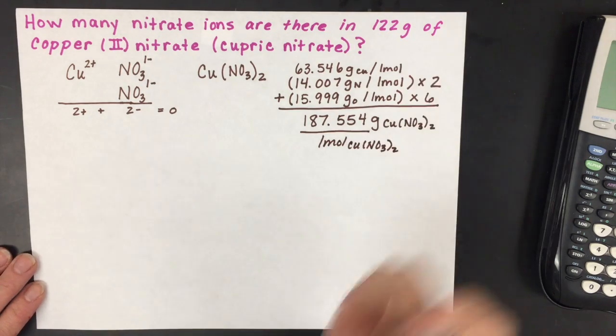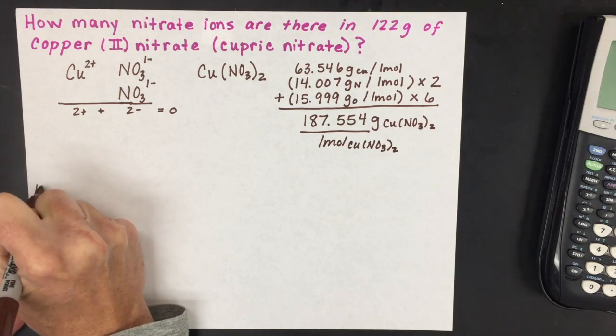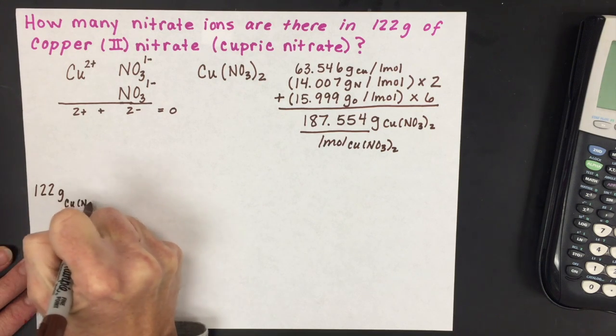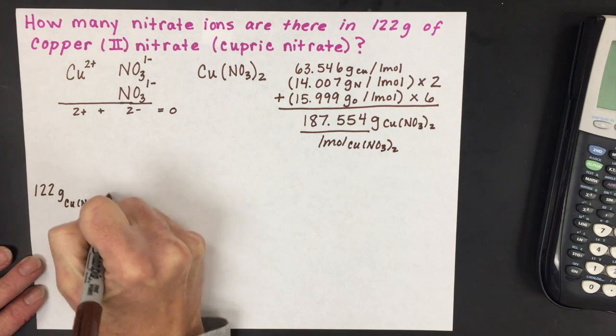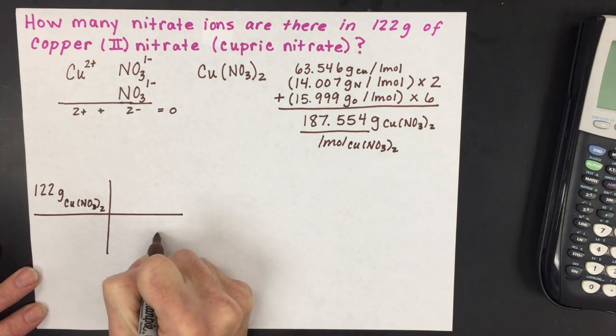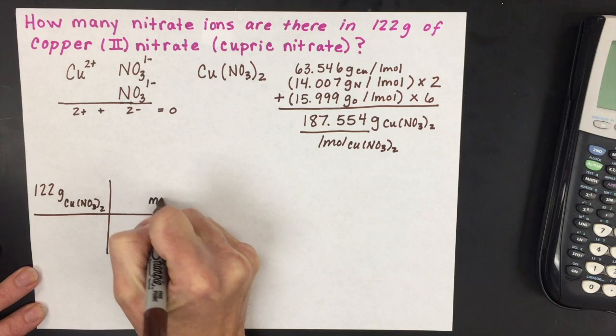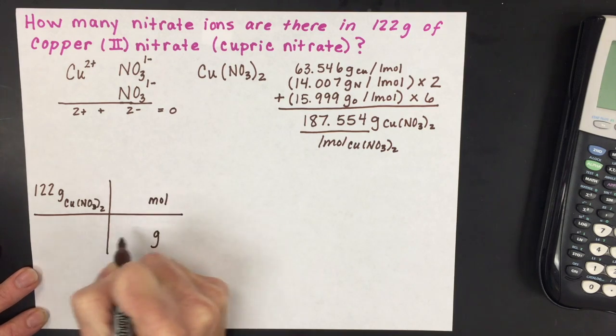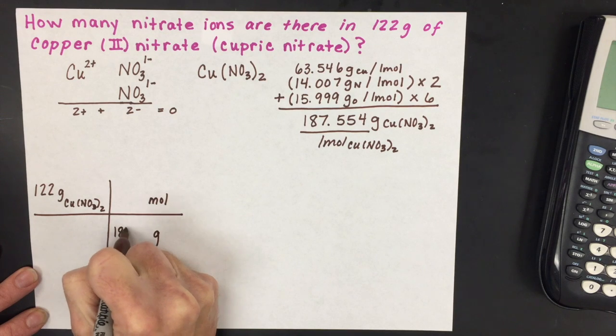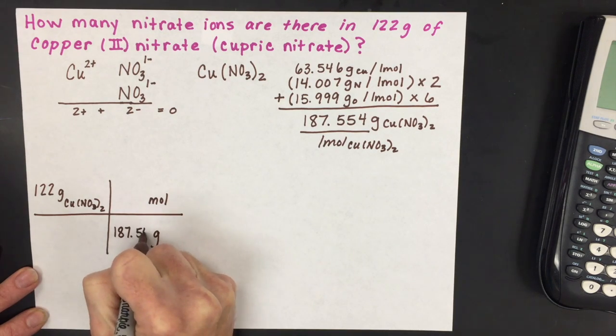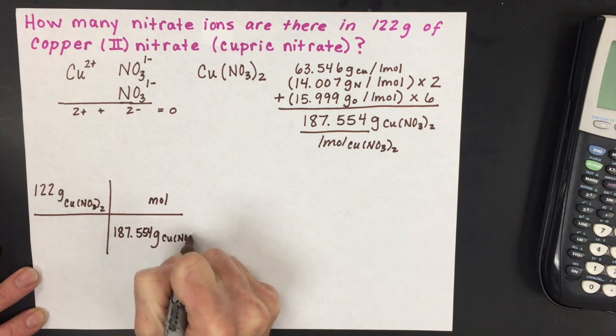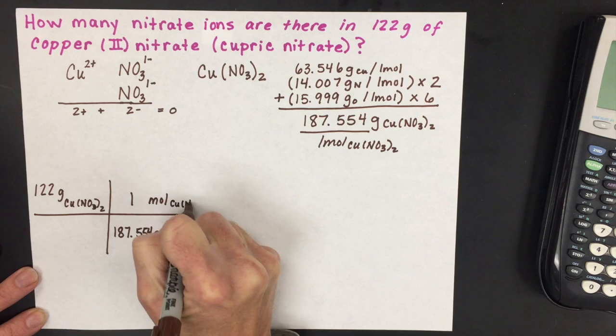The next step is to start with our given, 122 grams of copper (II) nitrate. We're going to convert from grams using 187.554 grams per mole of copper (II) nitrate.